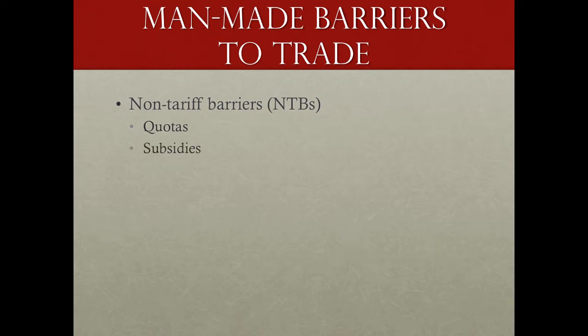Subsidies are trade barriers in the sense that they distort pricing and create competitive advantages for the subsidized products over foreign products that don't receive subsidies, making it harder for those foreign products to be exported to that market. Subsidies could also create an advantage for exports, making the prices of subsidized products lower than competing products in the domestic market. Subsidies are primarily used in the agricultural area.